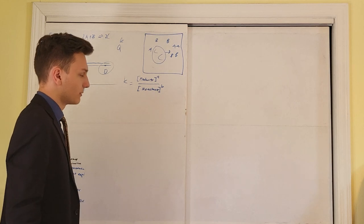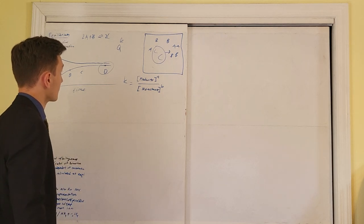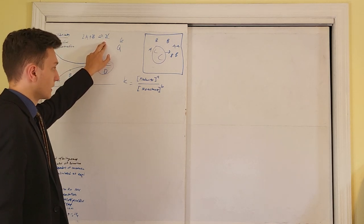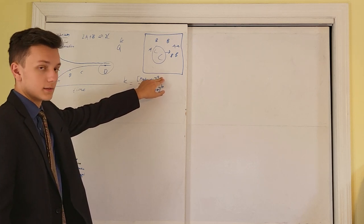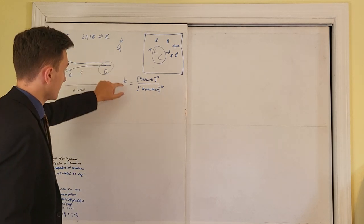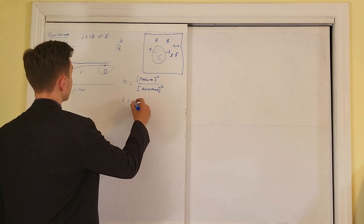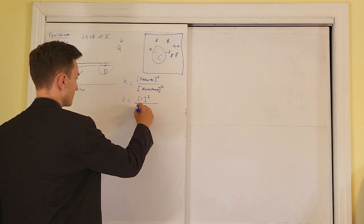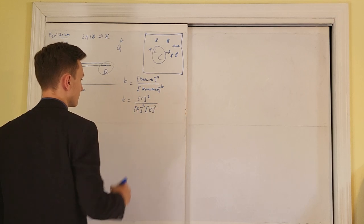For example, using the reaction 2A plus 2B forming 2C: C is a product with a coefficient of 2, so C is raised to the power of 2. K equals concentration of C squared over concentration of A squared times concentration of B squared.